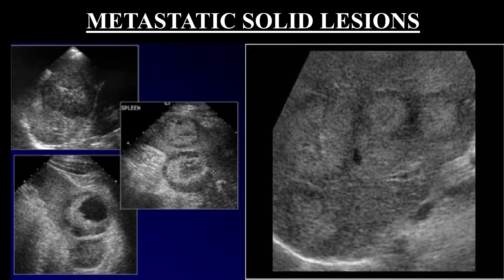Metastasis to the spleen is a late phenomenon rather than a presenting feature. Splenic metastases are most often associated with malignant melanoma, lymphoma, and leukemia, but can also occur with carcinomas of the breast, ovary, lung, and stomach. Sonographically, the lesions are variable and non-specific — solitary or multiple, hypoechoic, hyperechoic, mixed, or partially cystic. Thank you for your attention; I hope the tutorial was informative.